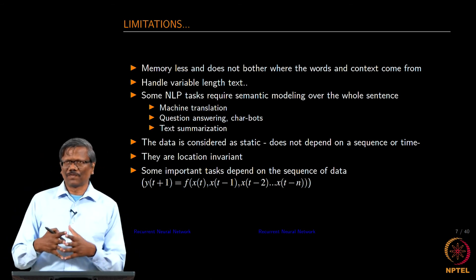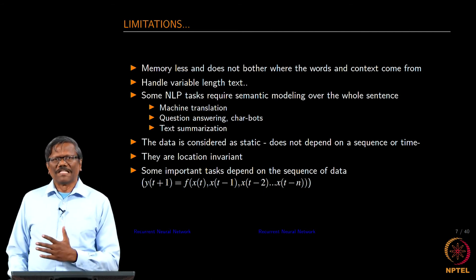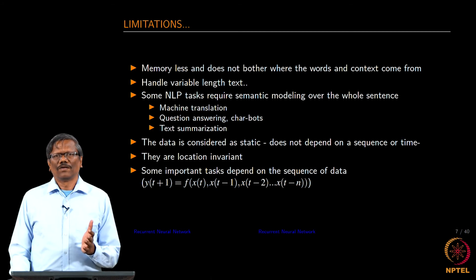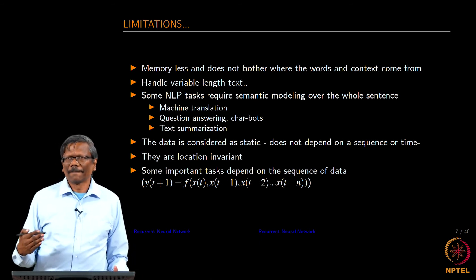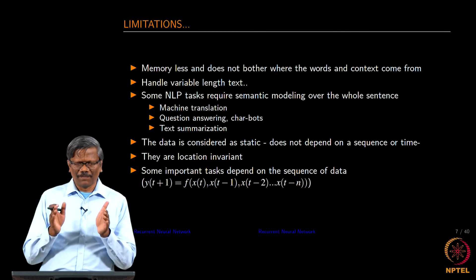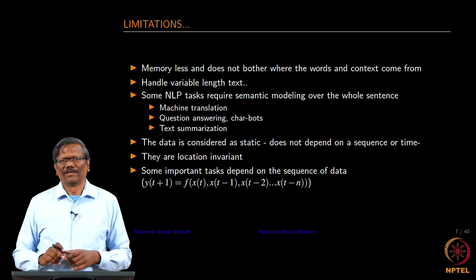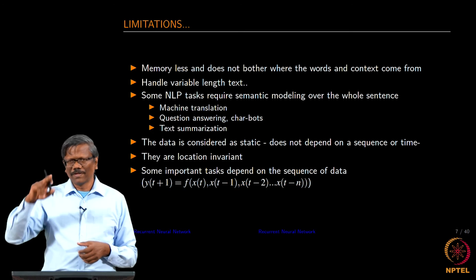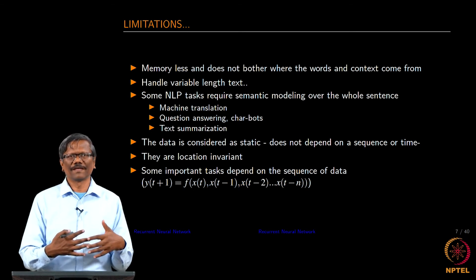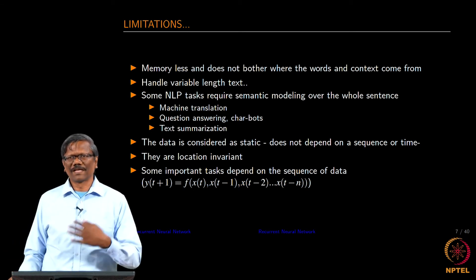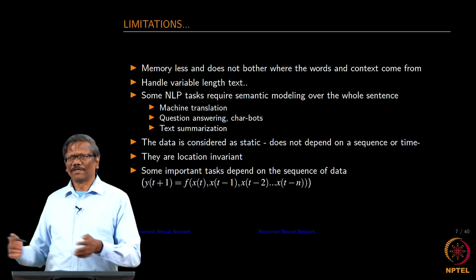The limitation that we have gotten into so far over the traditional model is they are truly memory-less, they do not really bother where the context is coming from. For example, when you train the network the weights are adjusted. For a given context or a given central word you get the context words. When you do the weight updation every time we lose what was there before, we do not really care about it, we just update so that the network gets into the equilibrium state very quickly.